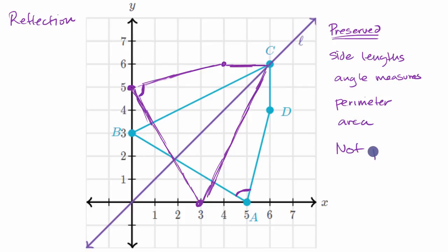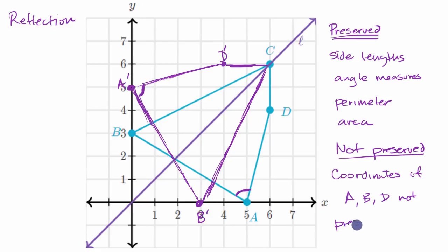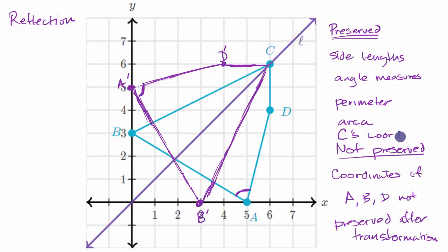What is not preserved? Going back to the example: coordinates are not preserved. The image of A, which is A prime, has different coordinates than A. B prime has different coordinates than B. C prime, in this case, happens to have the same coordinates as C because C happened to sit on the line of reflection. But D prime definitely does not have the same coordinates as D. So the coordinates of A, B, and D are not preserved after the transformation.